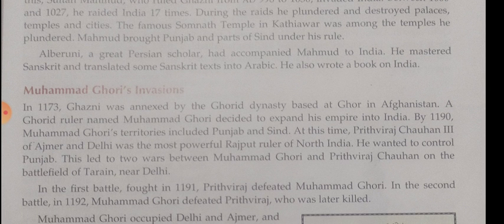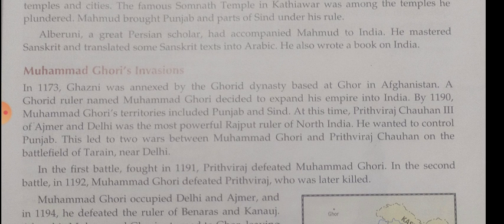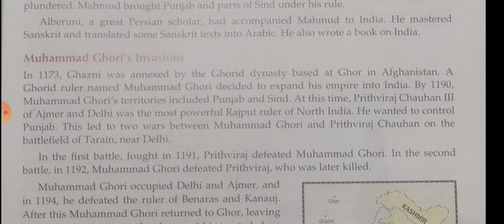Muhammad Ghori occupied Delhi and Ajmeer and captured many areas of India. When he returned, he left his Indian territories in the charge of his trusted slave and able general, Qutbuddin Aibak. After the death of Muhammad Ghori, Qutbuddin Aibak proclaimed himself Sultan of the Turkish territories in India and started the first dynasty — the Slave or Mamluk dynasty.